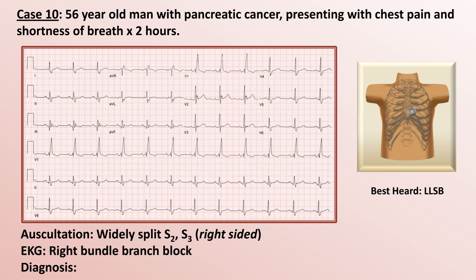The unifying diagnosis for acute shortness of breath, a widely split S2, a right-sided S3, and a right bundle branch block on EKG is a massive pulmonary embolism. The presence of the S3 is suggestive of right-sided heart failure, which could be followed by obstructive shock if not quickly addressed.